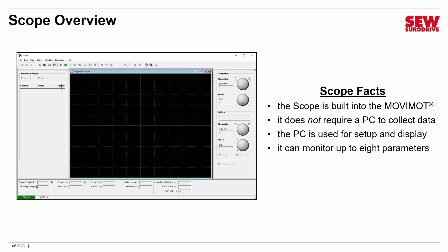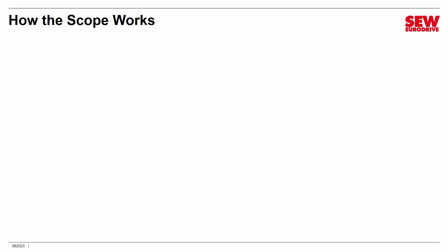The Scope can monitor up to eight parameters at once — sort of like an eight-channel bench oscilloscope, which is actually pretty good. In most cases you won't need to monitor eight parameters, but they are available if you need them. The Scope is a little bit quirky and cantankerous at times, and I'm going to show you some ways to work around those quirks. Before we get into setting up the Scope, I want to explain in greater detail how it works, because if you understand how it works, some of the setup is going to make a lot more sense.